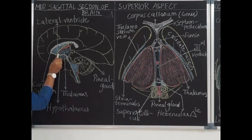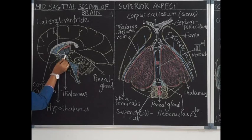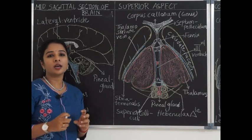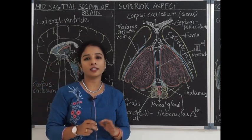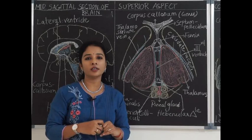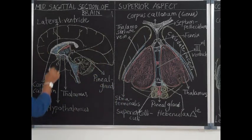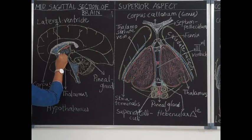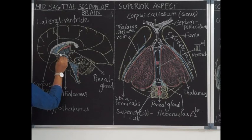The hypothalamic sulcus cranially extends from the interventricular foramen of Monro and caudally continues with the aqueduct of Sylvius, which continues down into the midbrain. The interventricular foramen of Monro is an opening which communicates the two lateral ventricles on either side and communicates below with the third ventricle. The area above the hypothalamic sulcus is called pars dorsalis and below it is called pars ventralis.